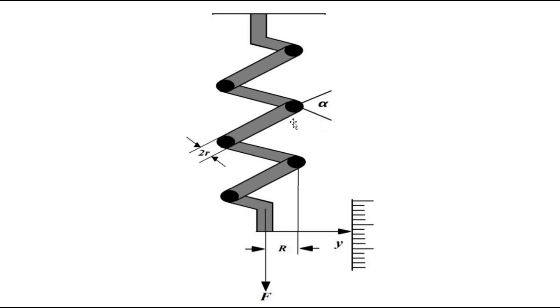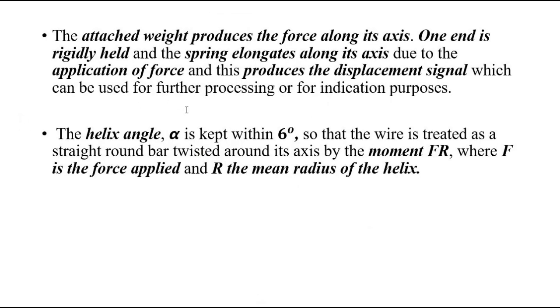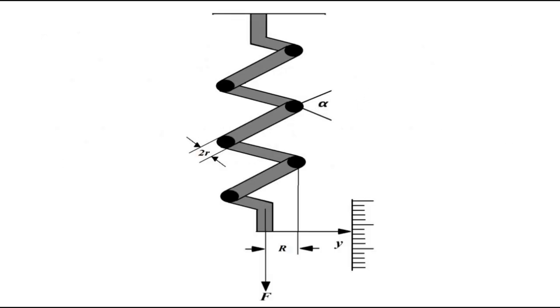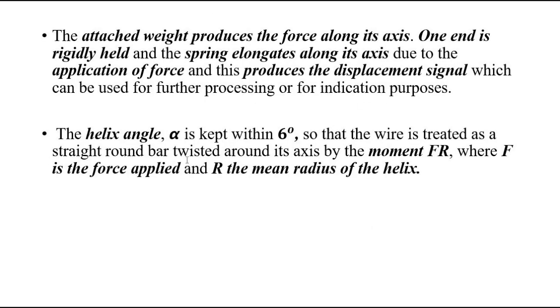First is the angle between each coil. In the shape of the helix, it is the helix angle in which the spring is coiled. That angle alpha is very important and it is kept within 6 degrees.